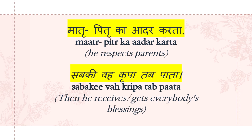Maata pitra ka aadar karta, sabki vah kripa pata. Maata pitra means parents — mom and dad. Aadar means respects, so he respects his parents. Kripa means blessings. Sabki means everyone. Then he receives everybody's blessings. He respects his parents and therefore gets everybody's blessings.